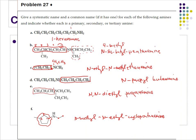Now I need to indicate whether each is primary, secondary, or tertiary. For A, the nitrogen is only attached to one carbon — this is a primary amine. For B, the nitrogen has a carbon to the left and a carbon to the right — secondary amine. For C, the nitrogen has one to the left, one above, and one to the right — three groups — tertiary. For D, one to the left and one to the right — two groups — secondary. For E, one below, one to the left, one to the right — tertiary amine. For F, one to the left and one to the right — secondary amine.